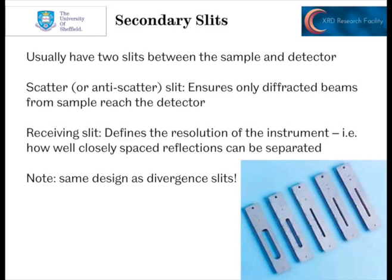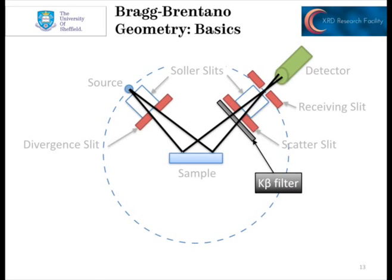For secondary slits, we usually have a scatter slit, which ensures only beams diffracted from the sample reach the detector so we're not getting beams coming from elsewhere in the machine. We also have the receiving slit, placed at the focal point — it defines the resolution of the instrument, how well closely spaced reflections can be separated. Note the design is exactly the same as the divergence slit. The final aperture to look at is the K-Beta filter, which tends to be exactly the same design as the slits but with a piece of metal foil — we covered those in the last video.